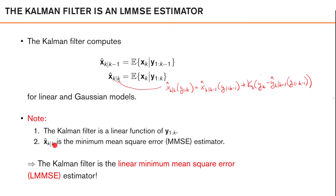Secondly, our estimator is the minimum mean squared error estimator — among all estimators, it is the best in a mean squared error sense. This comes from the fact that the posterior mean is the MMSE estimator. So if the Kalman filter is a linear function of data and it is the best estimator among all estimators, then surely the Kalman filter is the linear minimum mean squared error estimator. Now we are going to look at the properties of the LMMSE estimator in more detail.